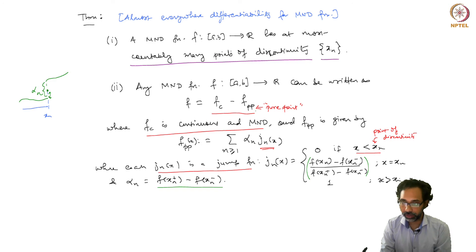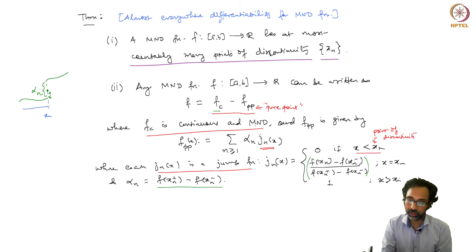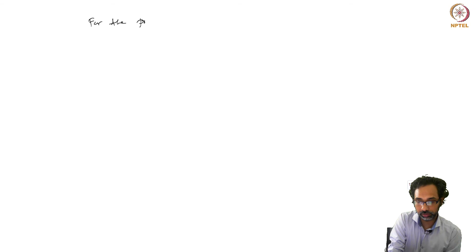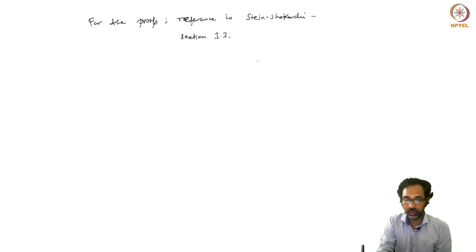In fact, the pure point function fpp is differentiable almost everywhere and its derivative vanishes almost everywhere. Since we have already proved that fc is continuous and monotonically non-decreasing, it is differentiable almost everywhere, so f is differentiable almost everywhere. For the proofs, the reference is Stein and Shakarchi's book, section 3.3, where you will find the detailed proofs for these results.